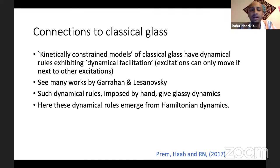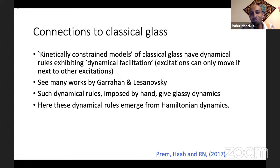These properties are very strongly reminiscent of kinetically constrained models of classical glasses. Kinetically constrained models are attempts to describe classical glass where you put in some constraints on what dynamical moves are allowed, and these models are known to exhibit glassy dynamics. Here we're getting the same sort of dynamical rules that you would get in a kinetically constrained model of classical glass — it's just they're emerging naturally from Hamiltonian dynamics.